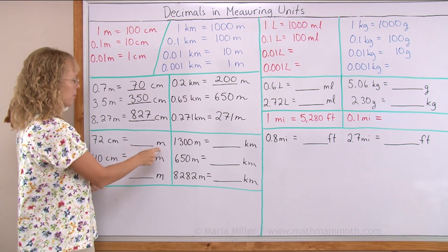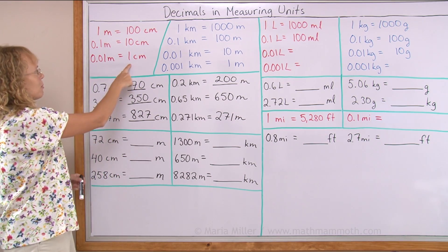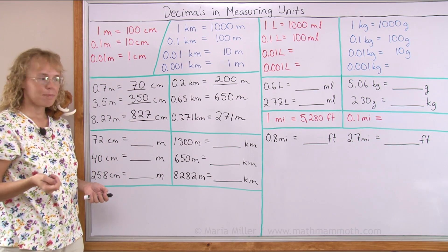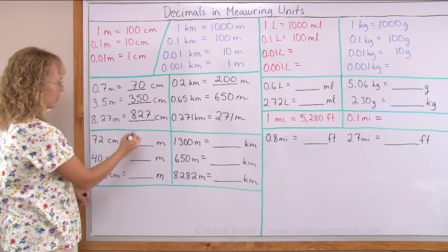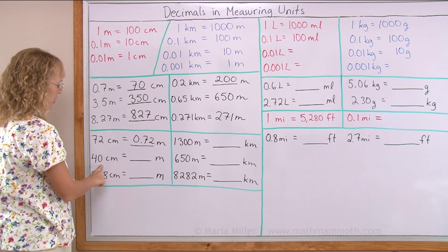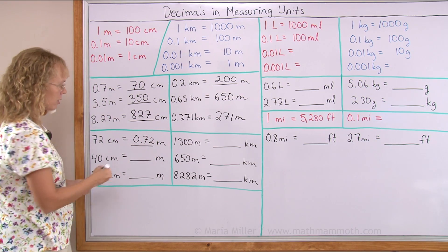72 centimeters in meters. One centimeter is a hundredth part. So this is 72 hundredths parts, or 72 hundredths of a meter. Just write the decimal 72 hundredths. And here 40 centimeters is 40 hundredths of a meter.